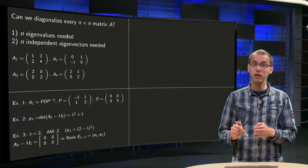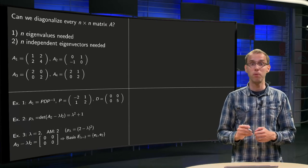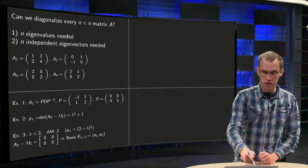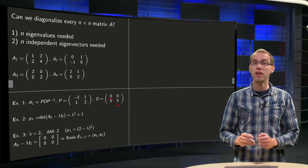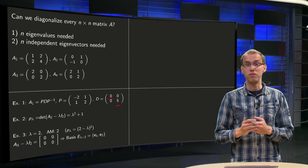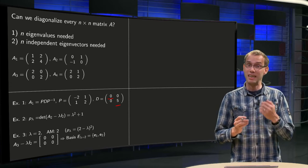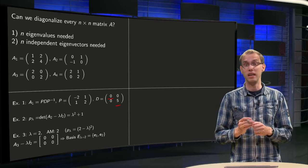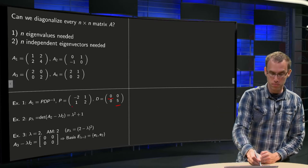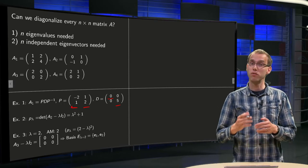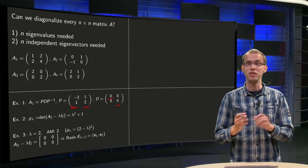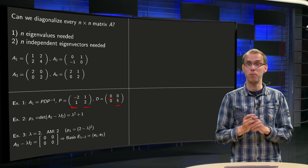We know from a previous example that A1 had two different real eigenvalues, 0 and 5. Both eigenvalues have at least one independent eigenvector; in this case we found (-2, 1) and (1, 2), so we could find our D and our P. In this case this matrix was diagonalizable.